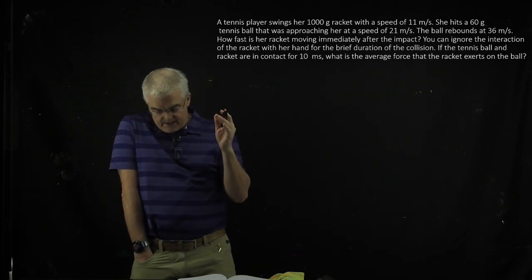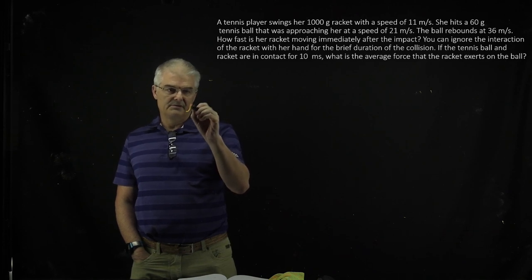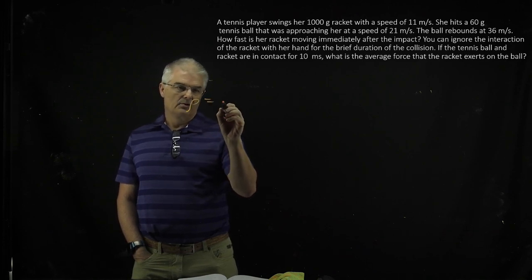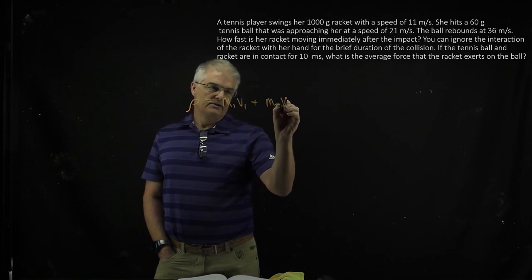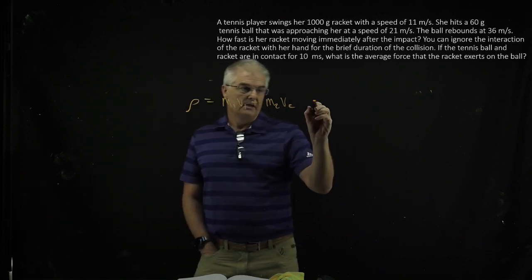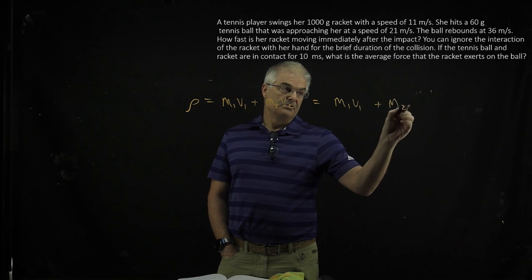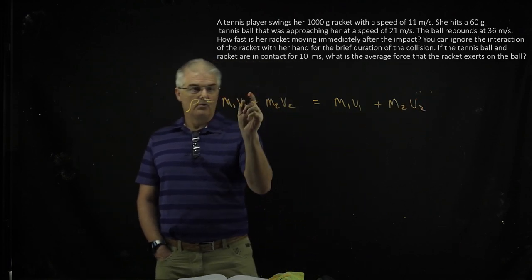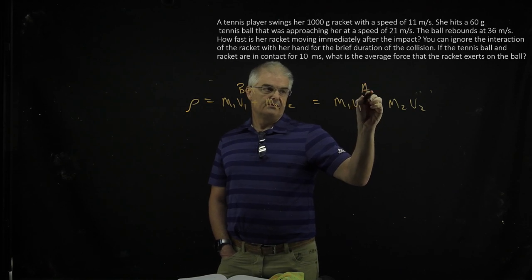I'm essentially going to use the law of conservation of momentum. This is a momentum problem. P, or actually rho, equals M1V1 plus M2V2. So this is the tennis racket, the 1, and the 2 is the tennis ball, is equal to M1V1 afterwards plus M2V2. This is the before, right? Before the collision, and this is after.